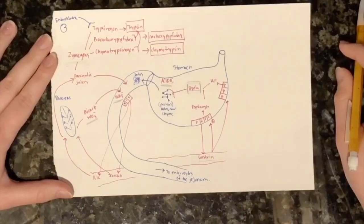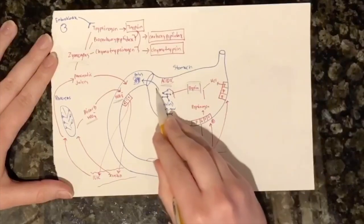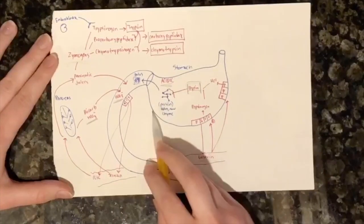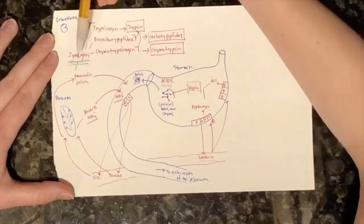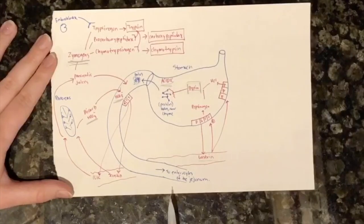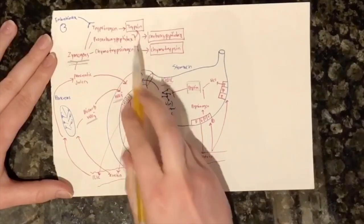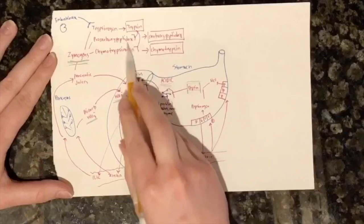When the chyme leaves the stomach, it must be neutralized by a bicarb secretion from the pancreas upon entrance to the small intestine. This allows the zymogens to be released as a result of CCK. Trypsinogen is activated by enterokinase and results in trypsin. Trypsin activates the two other zymogens that help further break down the protein.